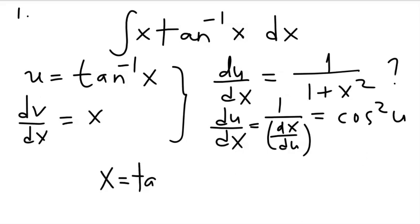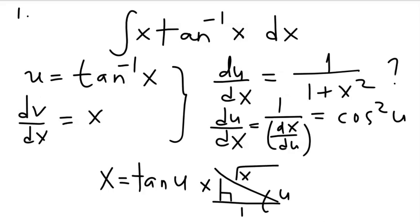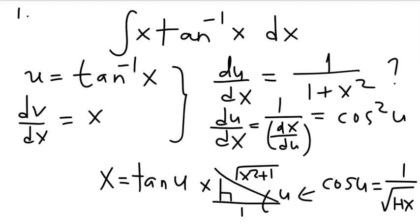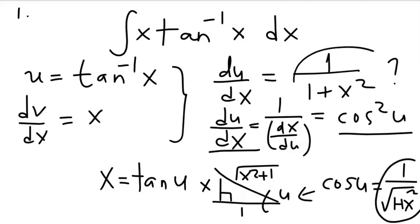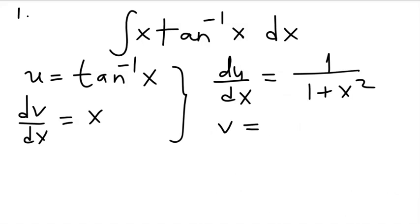Since x is tan(u), if we draw a right-angled triangle with the acute angle u, then x is the opposite side and 1 is the adjacent side, so the hypotenuse is √(x²+1). That means cos(u) = 1/√(1+x²), so du/dx, which is cos²(u), equals 1/(1+x²). To get v from dv/dx is simple — it's just the integration of x with respect to x, giving v = x²/2.